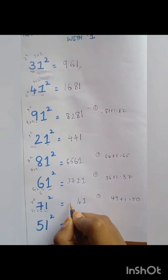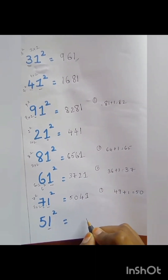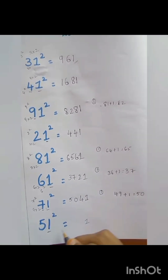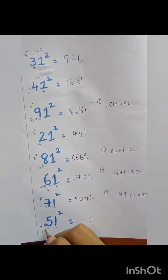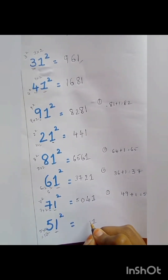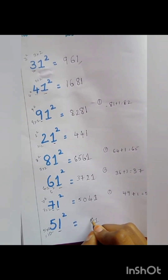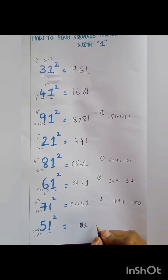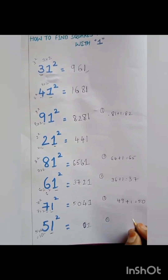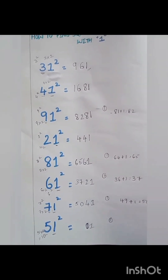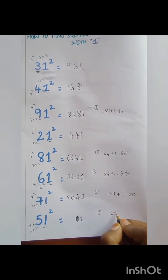The last example: 51 squared. The unit digit is equal to 1. And 5 into 2 is equal to 10 — 0 shall be placed here and 1 shall be carried. 5 squared is equal to 25. 25 plus the carried number is equal to 26. Therefore 51 squared is equal to 2601.